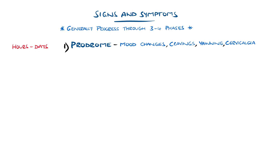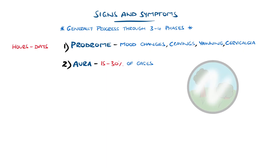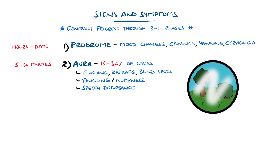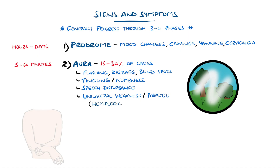Around 15-30% of cases then feature an aura. This can be a visual aura, often described as flashing lights, zigzags, or blind spots, and auras generally last up to around 60 minutes. Others can include tingling or numbness in the face or limbs, as well as potentially difficulty finding words or slurring of speech. A rarer aura features temporary weakness and paralysis on one side of the body, termed a hemiplegic migraine.